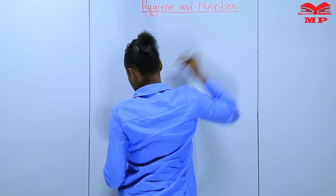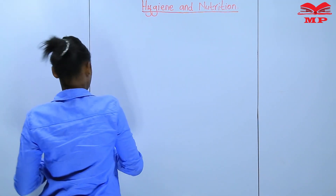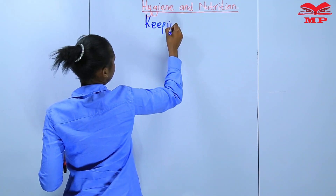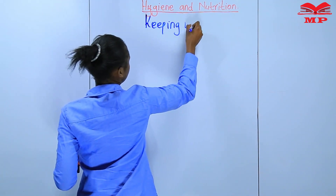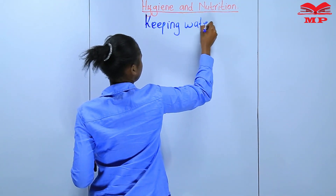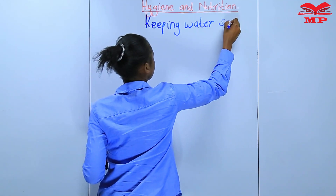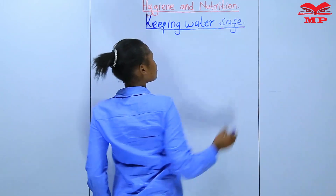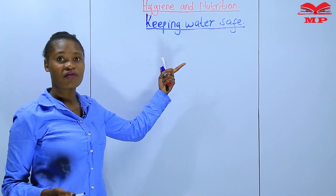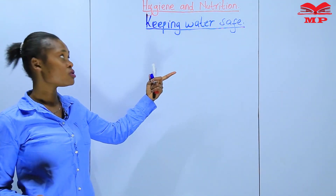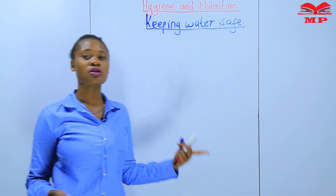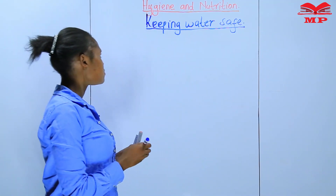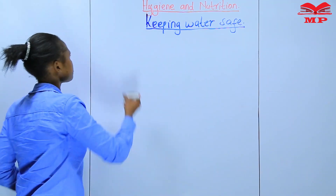We are still learning about keeping water safe. In our last lesson, we learned about ways in which you can contaminate water, and we discussed water contamination. So let's start by defining water contamination.